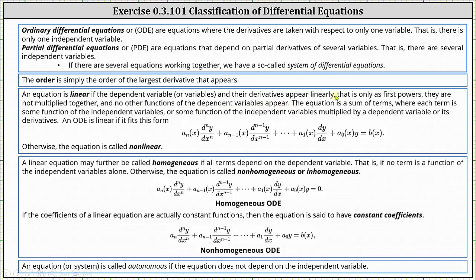We can say the equation is linear if it is a sum of terms where each term is some function of the independent variables, or some function of the independent variables multiplied by a dependent variable or its derivatives. An ordinary differential equation is linear if it fits the standard linear form shown below. Otherwise, the equation is called nonlinear.